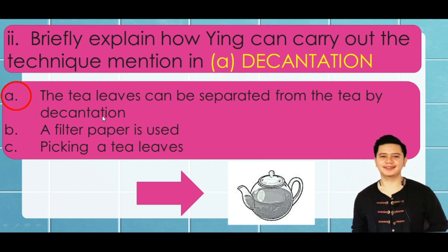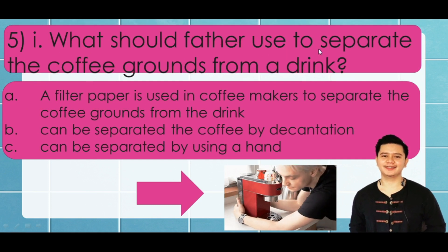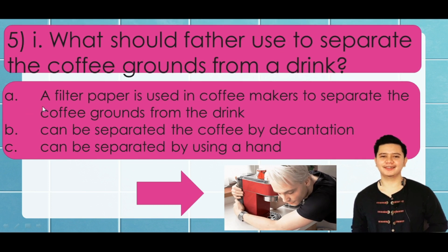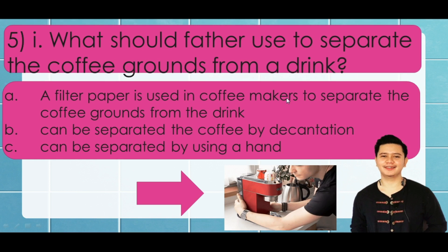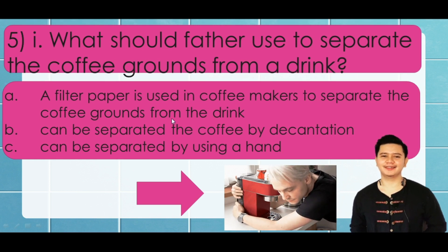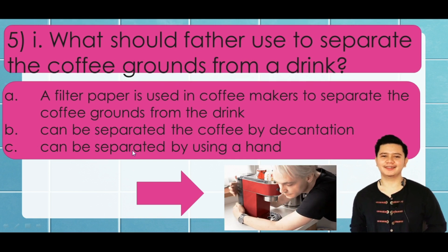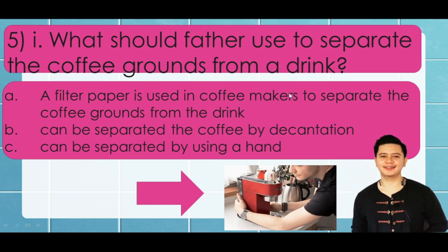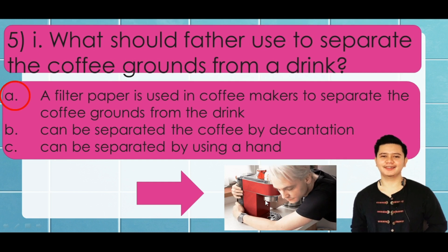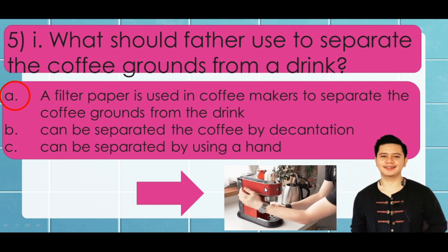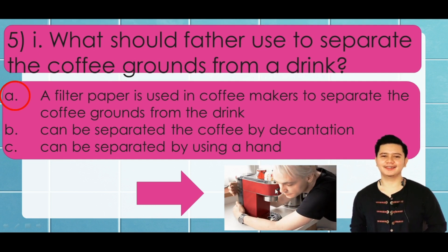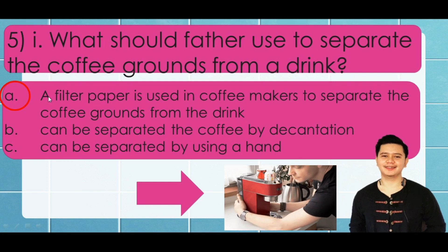Next question: what should father use to separate the coffee grounds from the drink? a) A filter paper is used in coffee makers to separate the coffee grounds from the drink, b) it can be separated by decantation, or c) it can be separated by hand. The correct answer is letter a, because this is an example of filtration using filter paper.